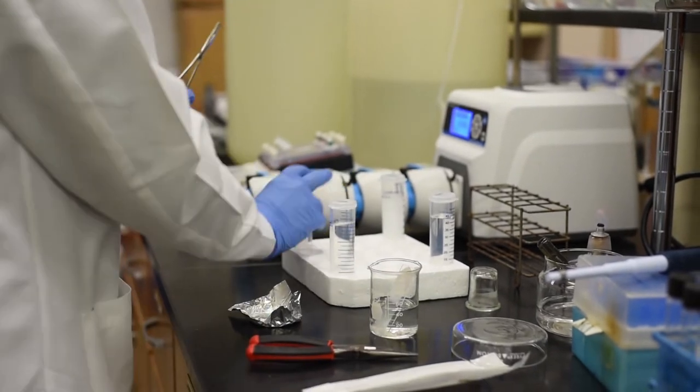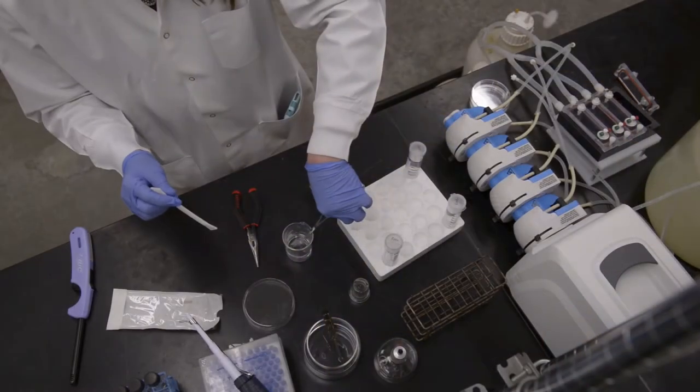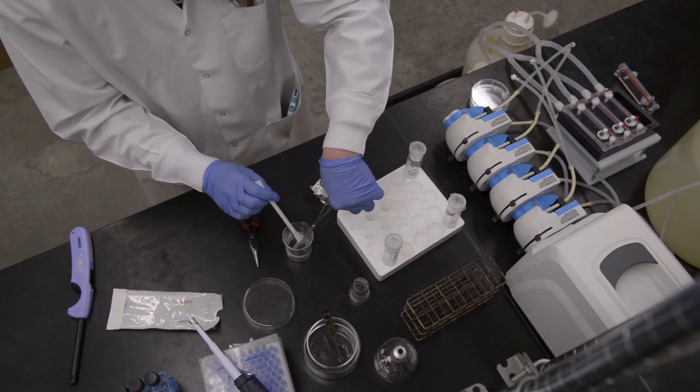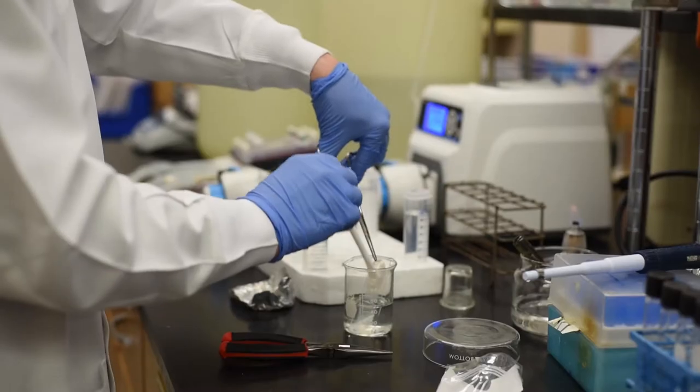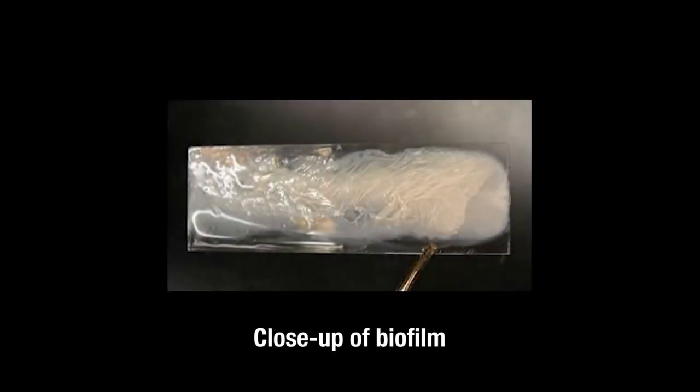To harvest the biofilm from the slide, place it in a beaker containing 45 milliliter sterile buffered dilution water. Use a sterile policeman spatula to scrape the biofilm from the surface into the liquid. Rinse the spatula in the liquid and repeat two to three more times.